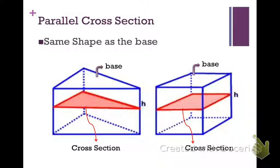Parallel cross sections are the same shape as the base. So if you have a rectangular prism and you are told that it is a horizontal or parallel cross section, then the cross section shape would be a triangle, as highlighted in the picture on the left. And if it is a rectangular prism with a parallel or horizontal cross section, a rectangular shape is formed, as shown on the right.